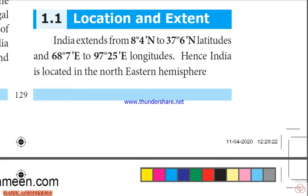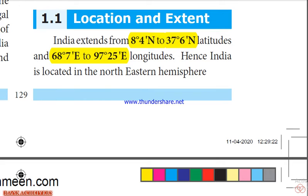Location and Extent: India extends from 8°4' North to 37°6' North latitude, and from 68°7' East to 97°25' East longitude. Looking at a world map, India is located above the equator in the Northern Hemisphere. We look at longitude horizontally and latitude vertically. India is in the North Eastern Hemisphere.